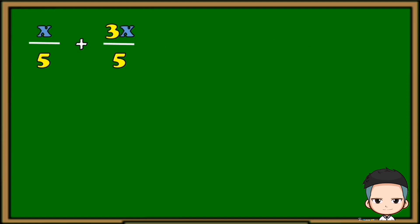Let's try this example: x over 5 plus 3x over 5. Since the denominators are the same, we're going to copy the denominator 5. Then we're going to add the numerators. x plus 3x is 4x, so 4x over 5 is our final answer.